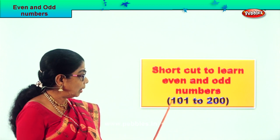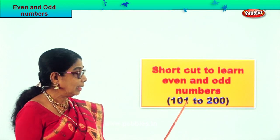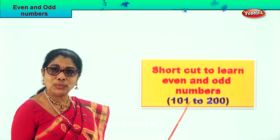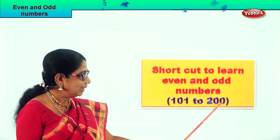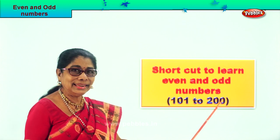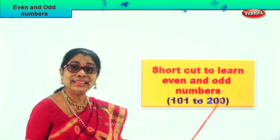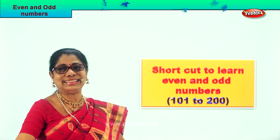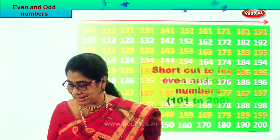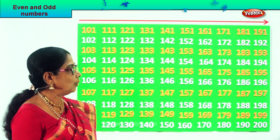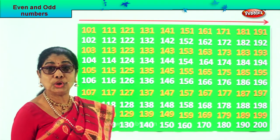Now here, 101 — numbers ending in one. Is it odd or even? Odd. Numbers ending in zero: even. Let's look at the exercise and say aloud and learn for ourselves.